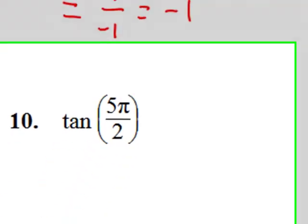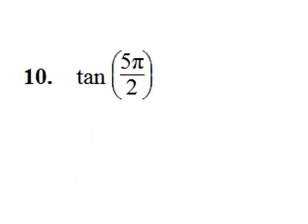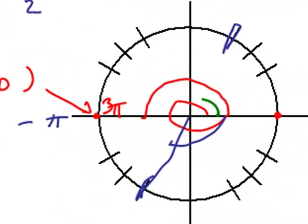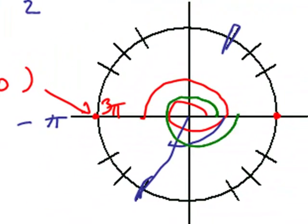Let's look at number ten. Tangent of five pi over two. Well, five pi over two is two pi plus a single pi over two. So that means that we're going to actually go around the circle once and an extra pi over two. So we go around the circle once.